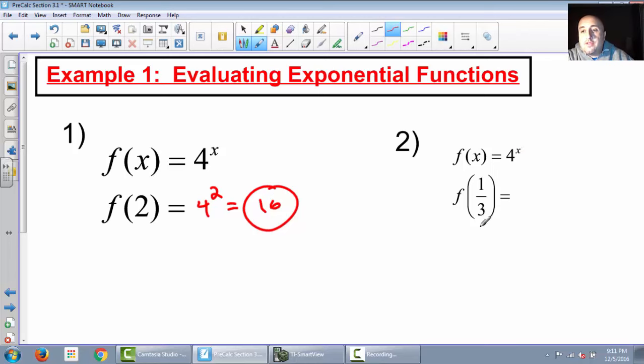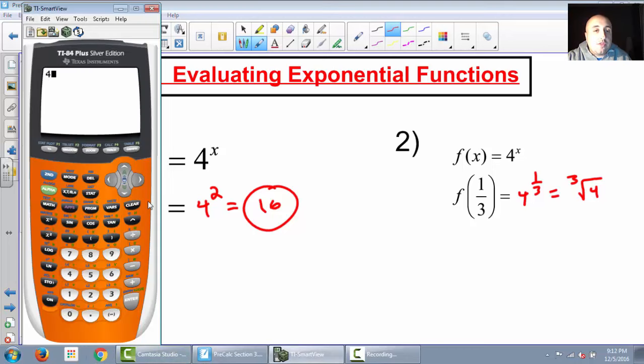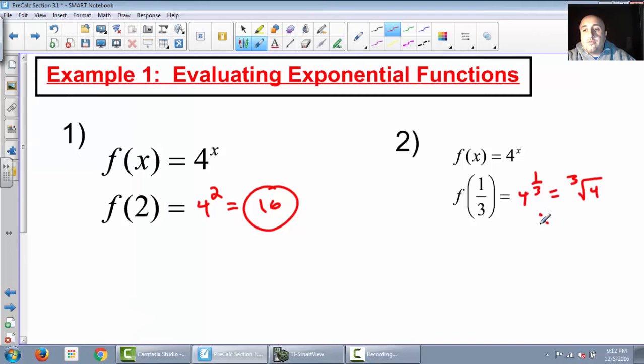Alright, now let's look at the next one. 4 to the x, and then the x we're plugging in is 1 third. So 4 to the 1 third, which is really equal to the cubed root of 4. Remember, any time we raise something to a fraction, it's a cubed root or a fourth root, whatever the number is on the bottom. So we can use our calculator for this one and get 4 raised to the 1 third. Remember, fractions have to go in parentheses. And we would get an answer of 1.59.